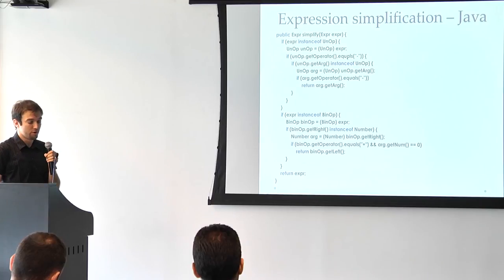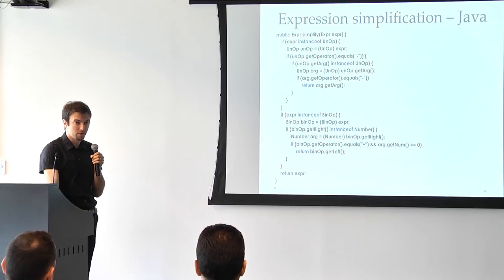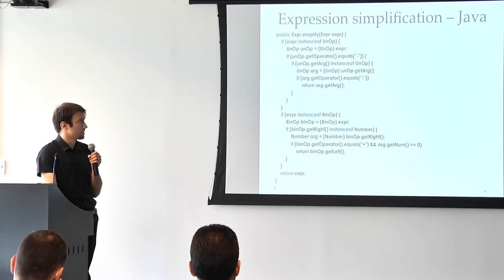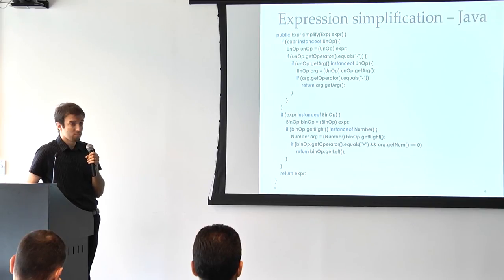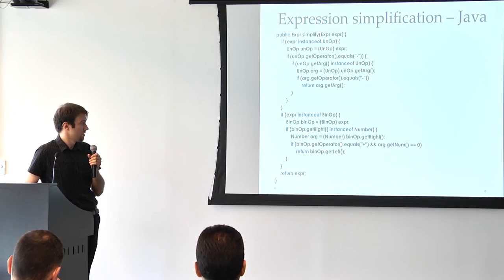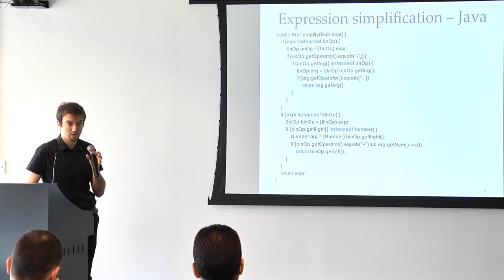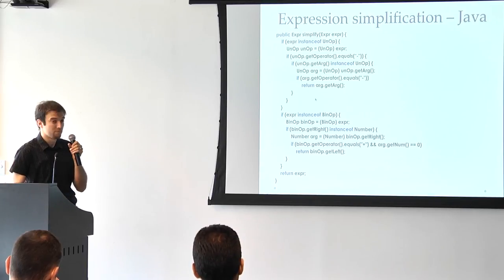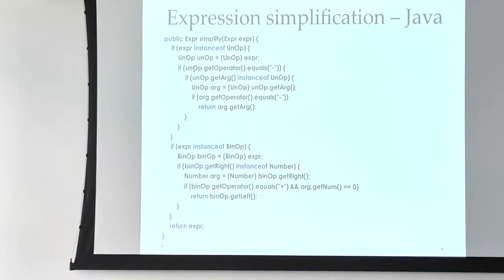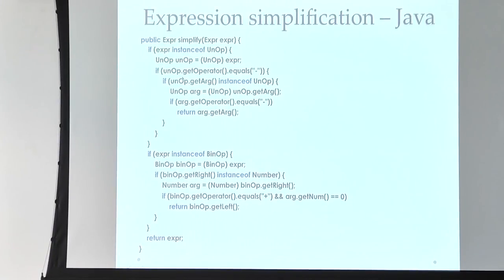And this is a powerful example of where the pattern matching mechanism helps us write much better code. This is an example of simplification of an expression. So we have an expression, an arithmetical expression. We want to basically take any two consecutive minuses and prune them and do the same for plus zero. This is the essence of this code. But look at the amount of boilerplate that we have here. So we need to check if this is an unary operator. If it is, we need to cast to it. Then we need to get the operator once it's casted. And get the arguments, check the instance, the type of the arguments, cast, and so on. Same here.